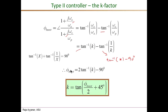Therefore K can be obtained as: K equals tan of (phi_boost over 2 plus 45 degrees). Since we already know the required phase boost from the previous equation, we can calculate K, and then knowing omega_c we can calculate the zero location omega_z and pole location omega_p.